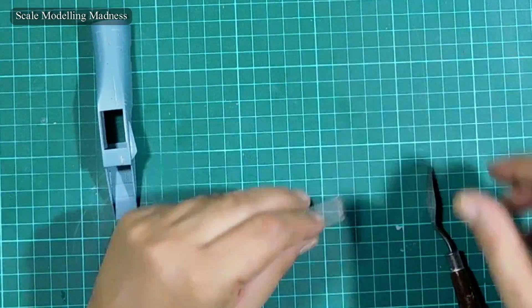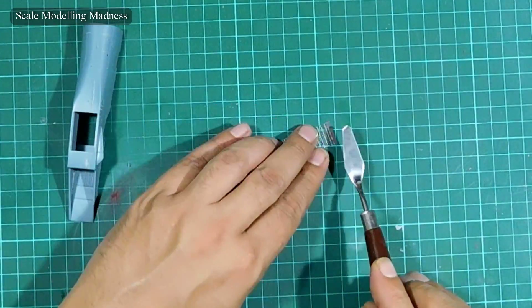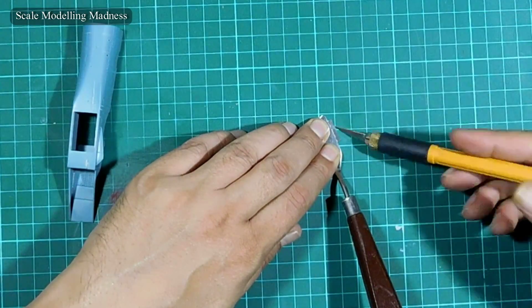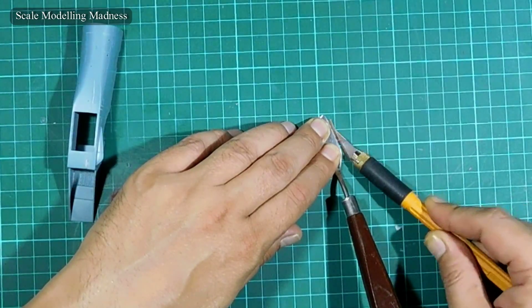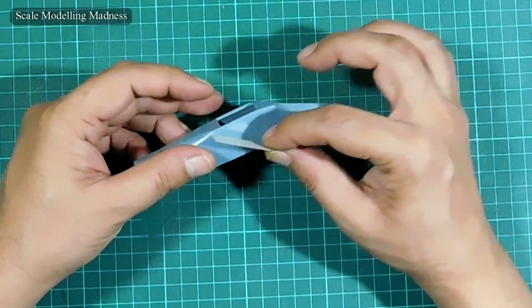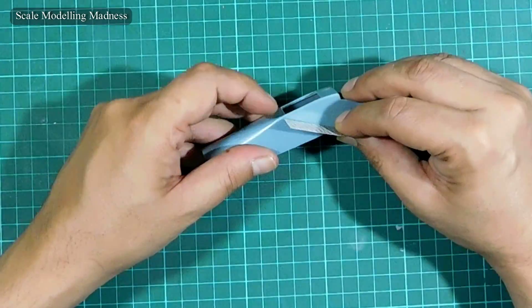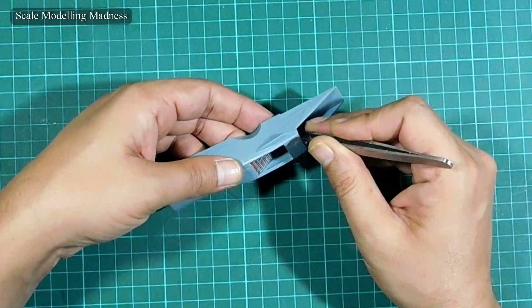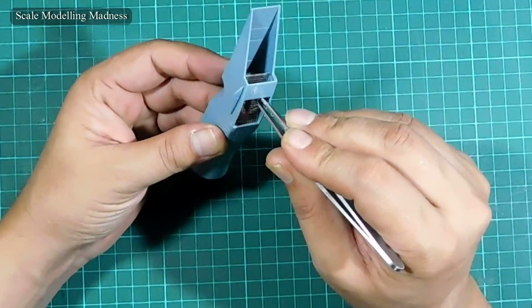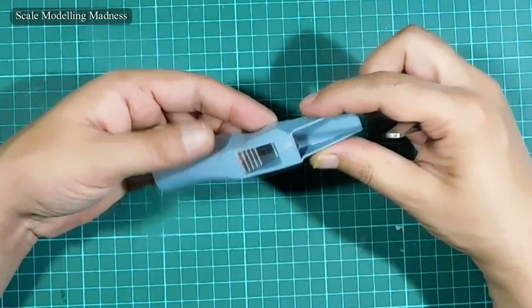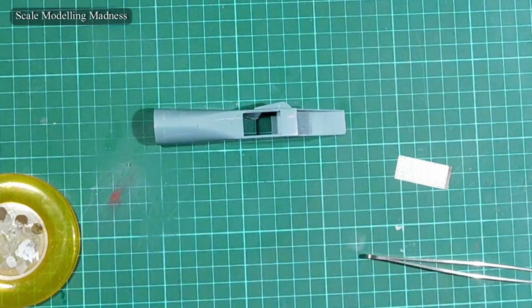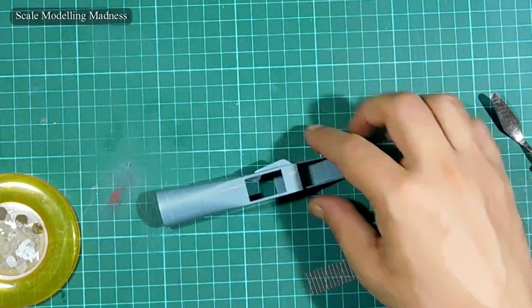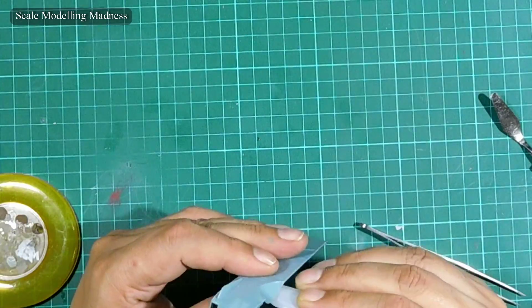Next, I add the photo etch air intake grill. I don't have a photo etch tool, so I simply improvise. It's not that difficult, considering it's a simple bend. As I bend, I keep checking the angle. And some superglue to fix the grill in place.